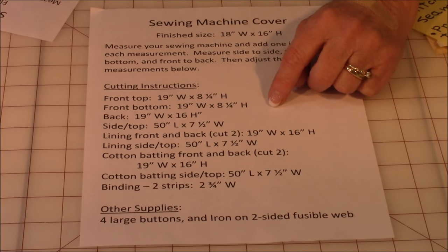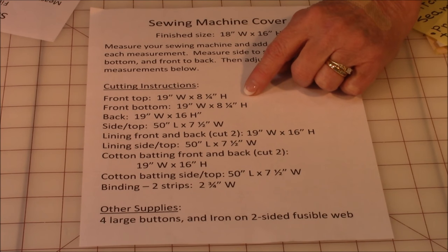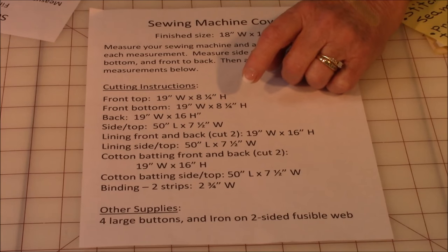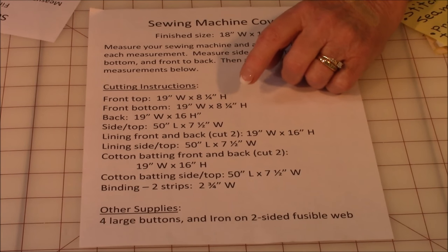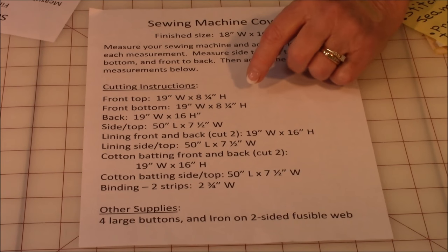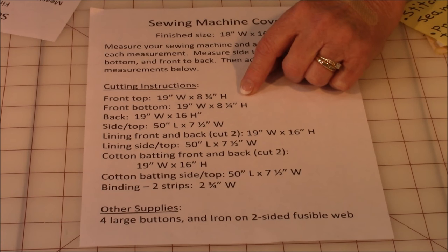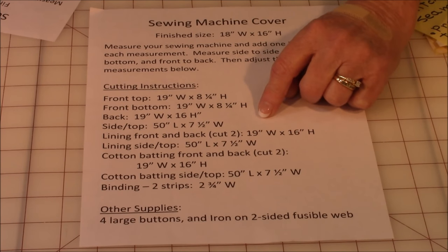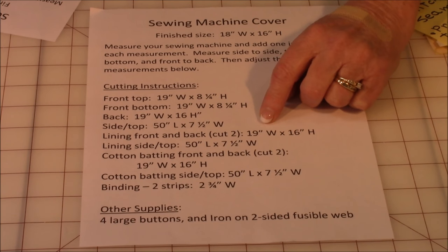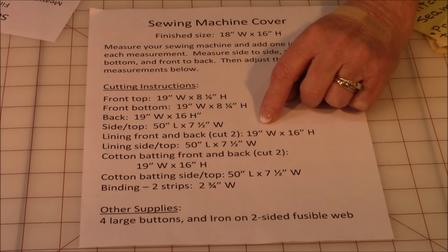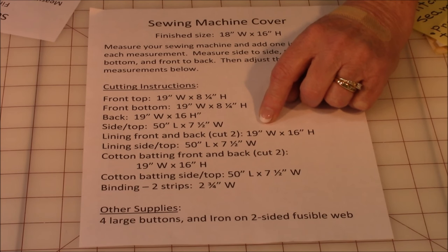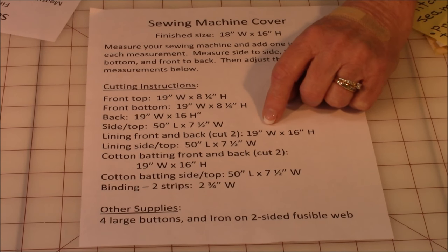Now you're going to need to cut for the both the top and the front, top front piece and top front bottom piece. There's two pieces for the front. 19 by 8 and a quarter. Then the back is 19 by 16. The side top is 50 by 7 and a half. Now if you don't have fabric that's 50 inches long, then cut two pieces 25 and a half inches. Stitch them together and that will give you a piece long enough.